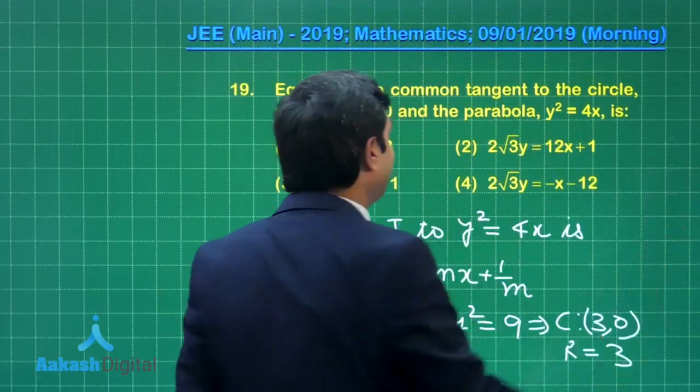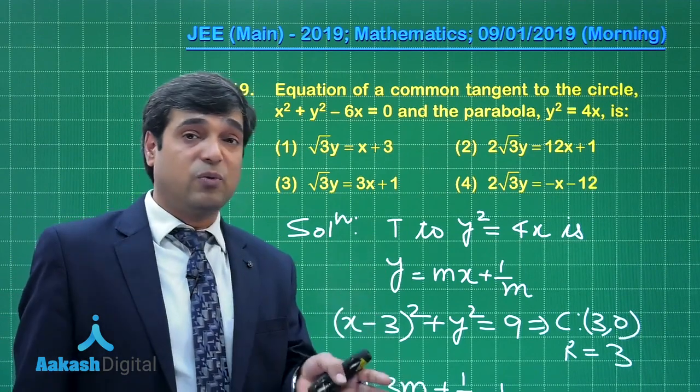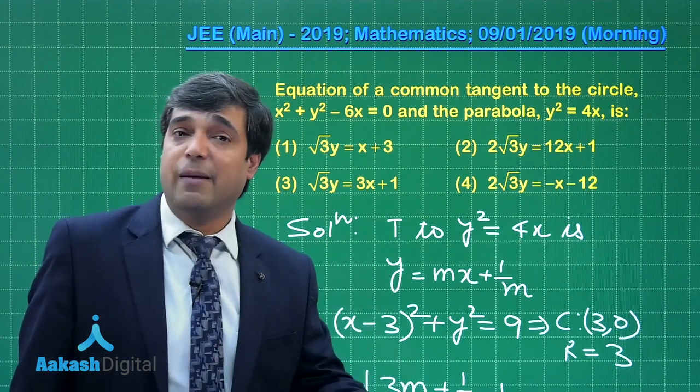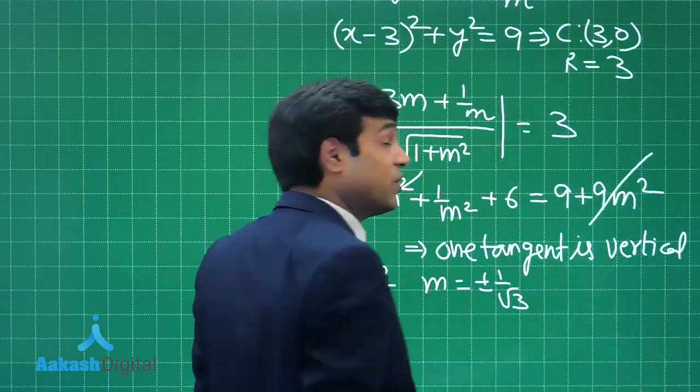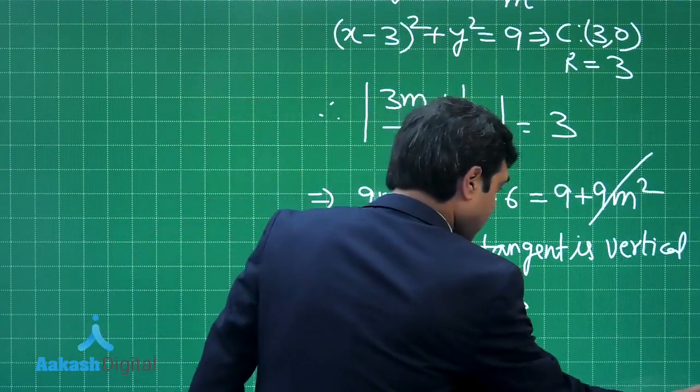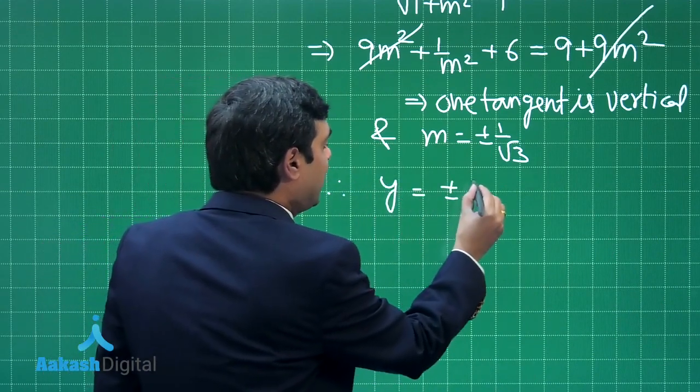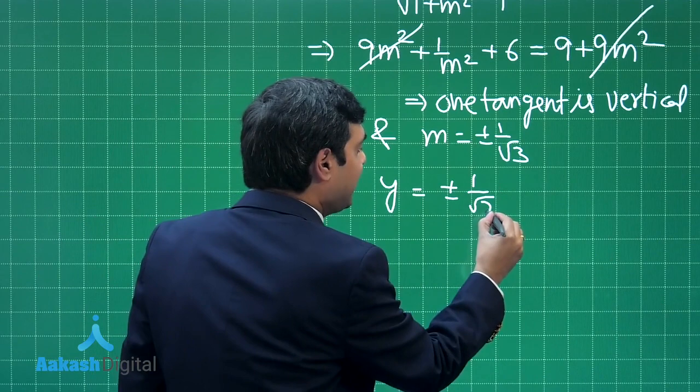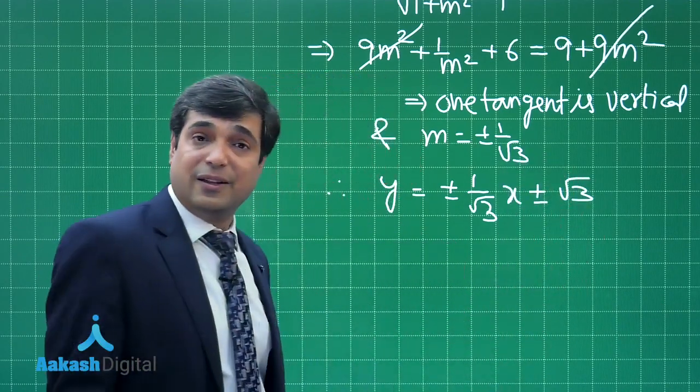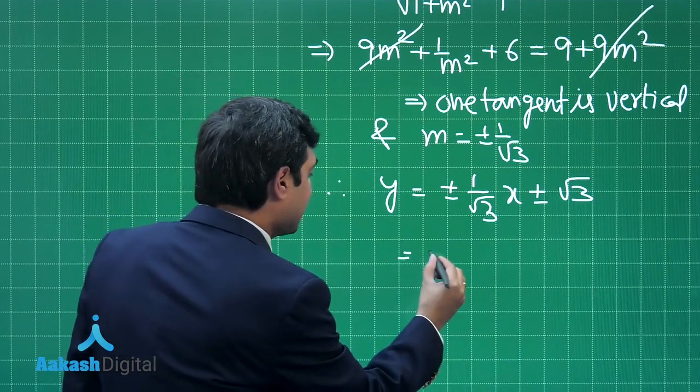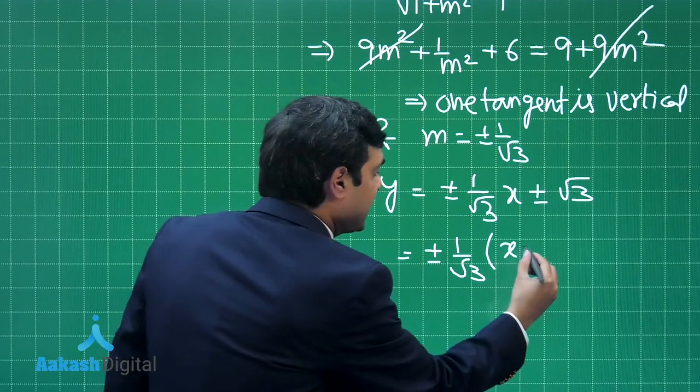If we look at the given options clearly, vertical tangent is not mentioned. So we have to go with the option like m = +1/√3 or m = -1/√3. So let us write down in the equation of tangent assumed for parabola. Therefore, y = ±(1/√3)x ± √3. This is clear. Taking plus minus sign common also taking LCM, we have x + 3.